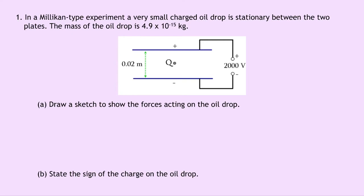So let's get started. In our one and only example it says that in a Millikan type experiment a very small charged oil drop is stationary between the two plates. The mass of the oil drop is 4.9 times 10 to the minus 15 kilograms.